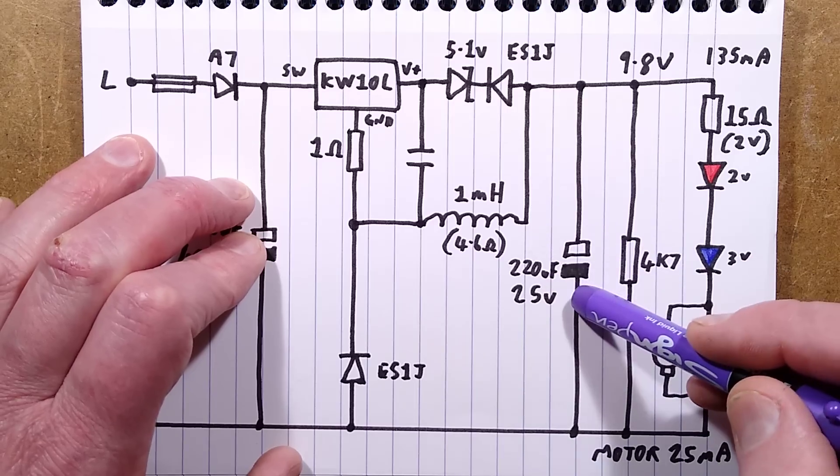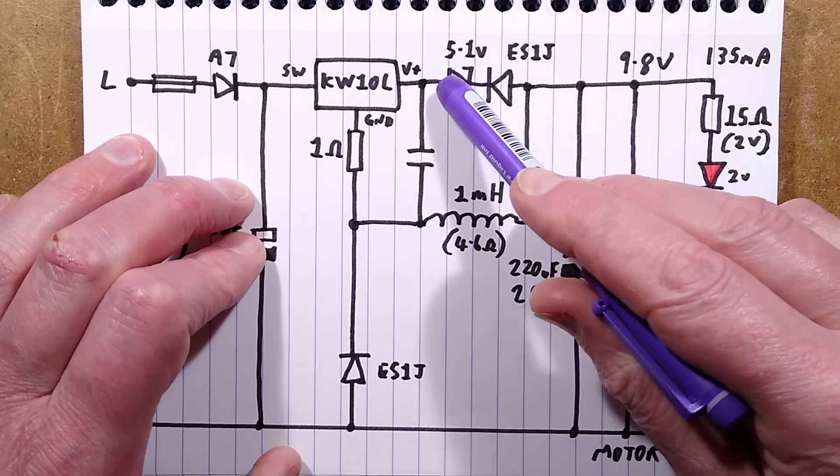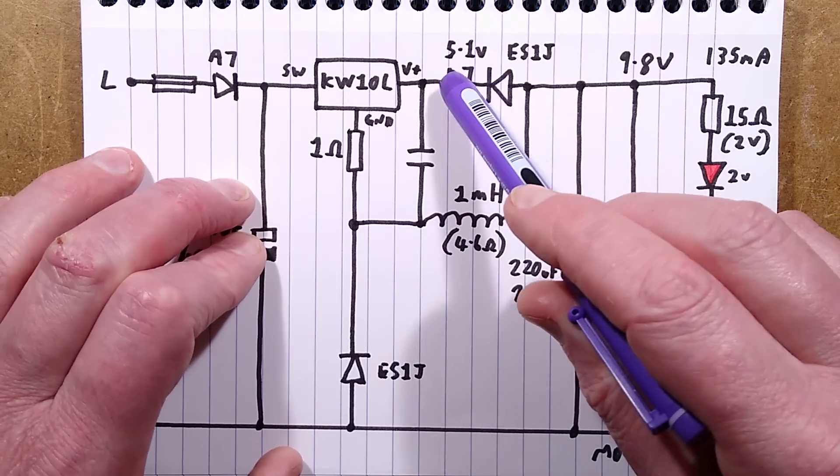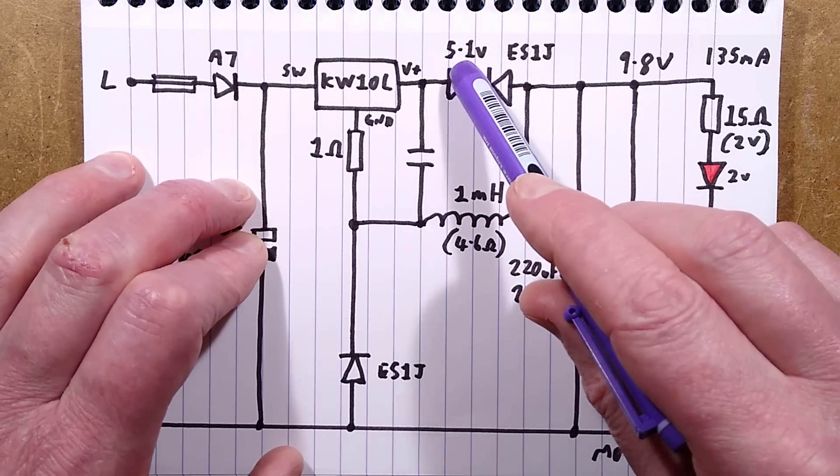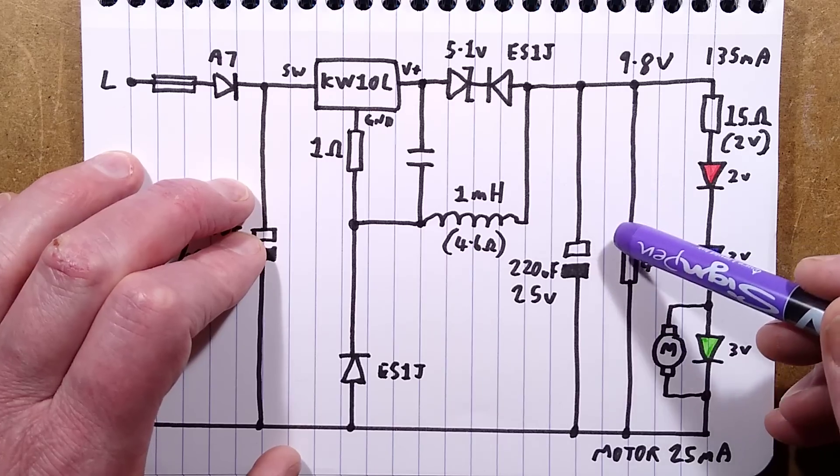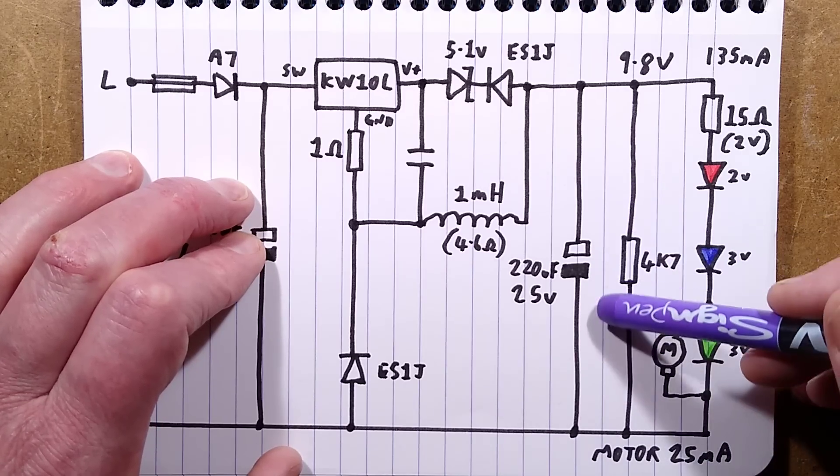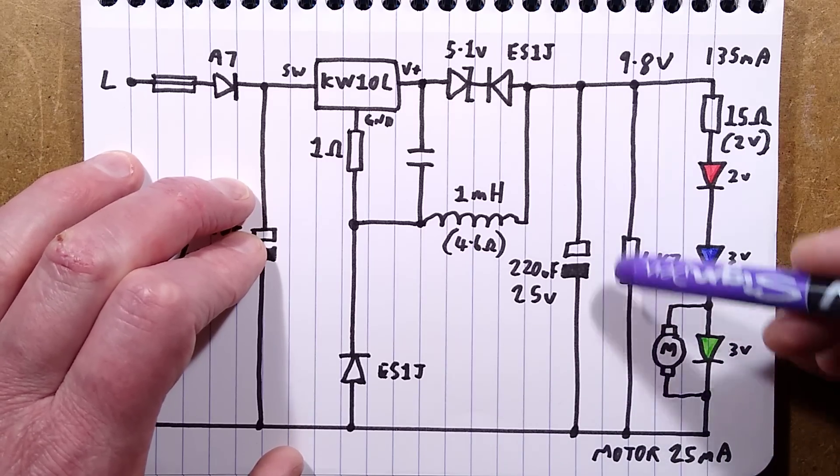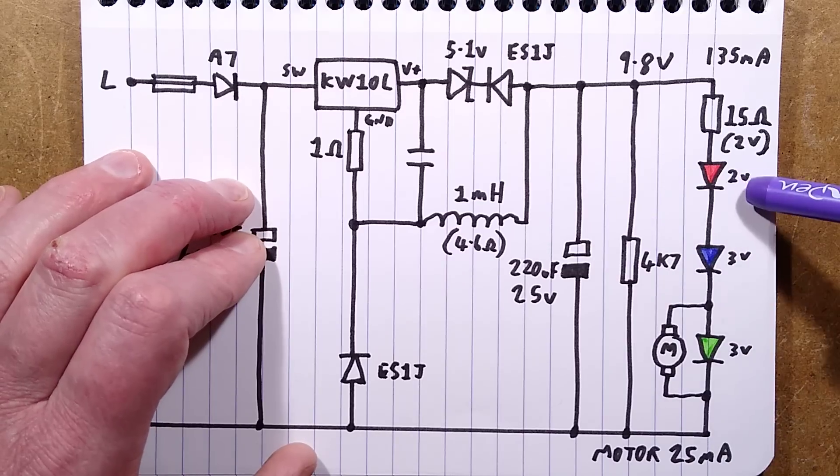That then tops the capacitor up to 5 volts plus their zener drop here. They've added that 5.1 volt zener in to add on to that existing 5 volts to give roughly 10 volts. Then there's a basic 4k7 load resistor.